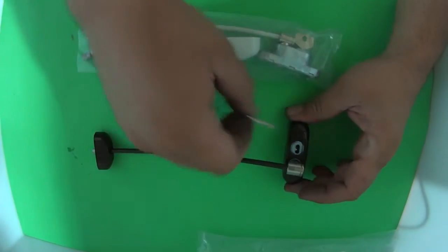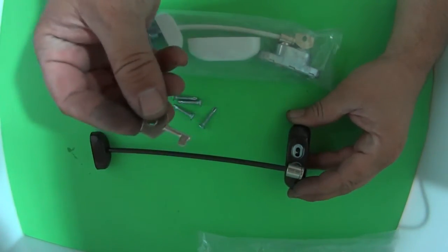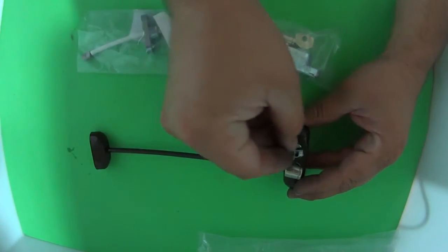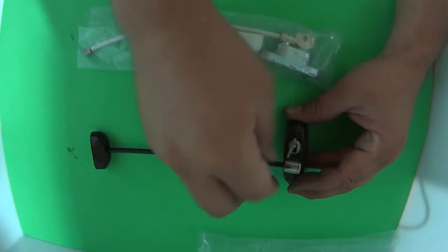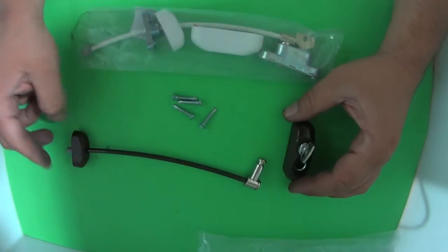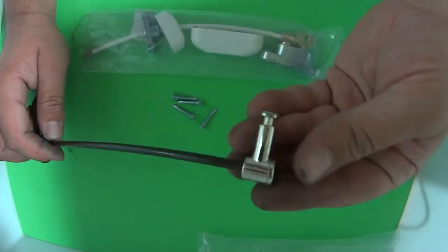This window lock here, I'll take you through on how to unlock it and how to install it. You have a key. It comes with one key per window lock. You simply turn that, you undo it, and this comes out here. This is your locking bar here.